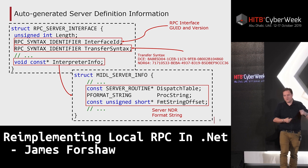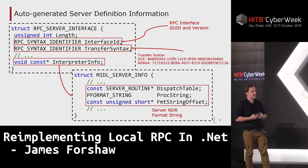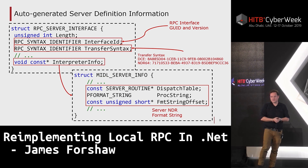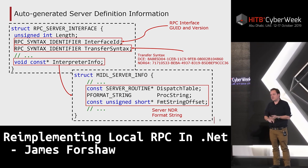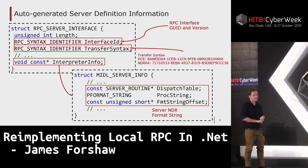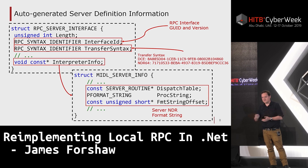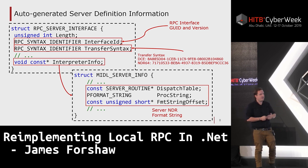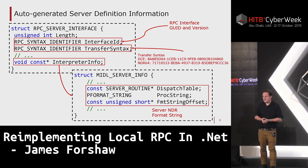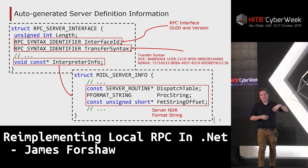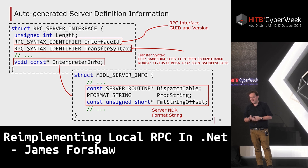In the generated server code you have the RPC server interface structure, which defines things like the list of functions you can dispatch to, the interface ID containing the unique identifier and version, and something called the transfer syntax — the protocol you'll talk between the two endpoints. Finally there's the interpreter info field, a pointer to a separate structure defining your dispatch table. It also contains something called a format string — a set of bytecode defining how the RPC runtime should marshal parameters between client and server.